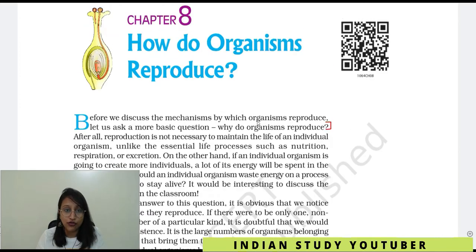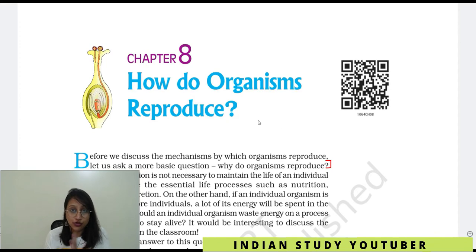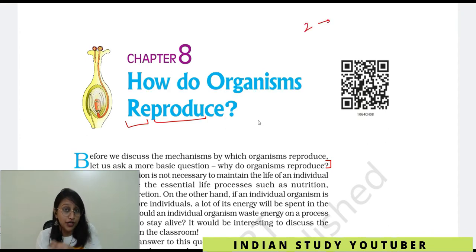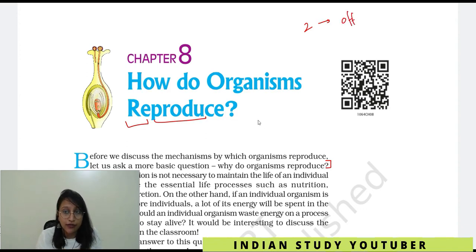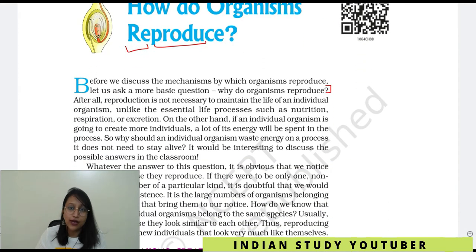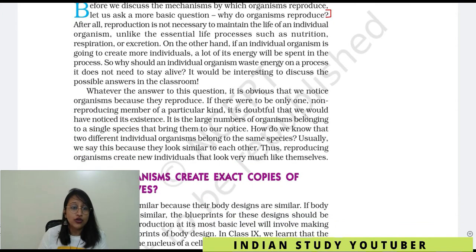First of all, let me tell you about the term 'Reproduce.' If you bifurcate this word, you get 're' and 'produce.' So here there are two individuals — they are reproducing, they are producing something. And those who form the next generation, we call them offspring. In scientific language, we call them offspring.